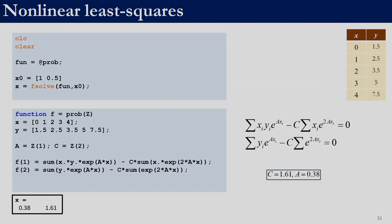For those of you who are new to MATLAB, we will have a separate video where you will be able to understand how to solve non-linear equations. Here we will quickly brush through. The CLC command will help you to clear the command window, and 'clear' will remove all the variables from the MATLAB workspace. Here we are defining a function handle named 'fun'. The function 'prob' is written in a separate function file, and the name of that function is being assigned to this variable 'fun' using the @ symbol. So 'fun' is now a function handle — whenever we access 'fun', we will actually be accessing the function 'prob'.